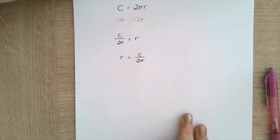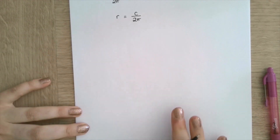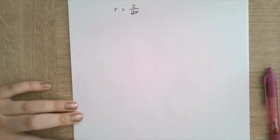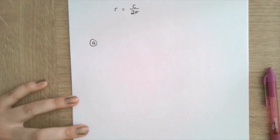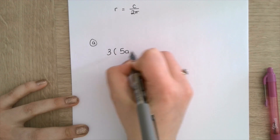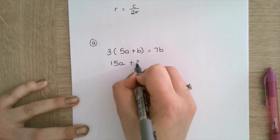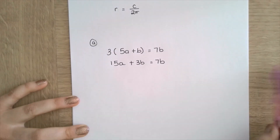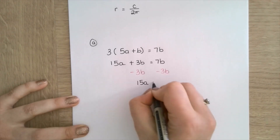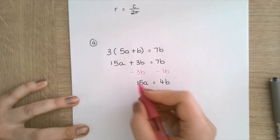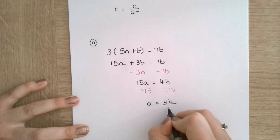A few more examples to give you a variety of styles. This time I want to make A the subject of 3 brackets 5A plus B equals 7B. I expand the brackets: 15A plus 3B equals 7B. Subtract 3B from both sides: 15A equals 4B. Divide both sides by 15: A equals 4B all over 15.